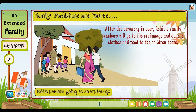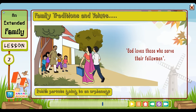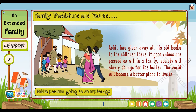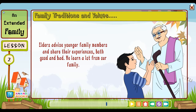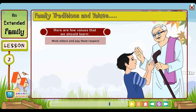After the ceremony, Rohit's family will go to the orphanage and donate clothes and food to the children there. His grandparents had started this tradition — they feel it is important to help those who are not as lucky as they are, because God loves those who serve their fellow men. Rohit has given away all his old books to the children there. If good values are passed on within a family, society will slowly change for the better. Elders advise younger family members and share their experiences. Here are a few values we should learn: wish elders and pay them respect, speak softly and sweetly, participate in family gatherings, look after guests.